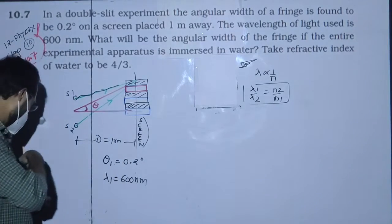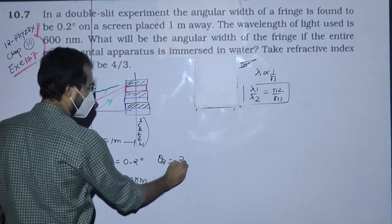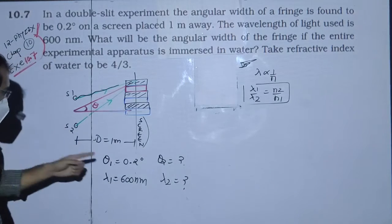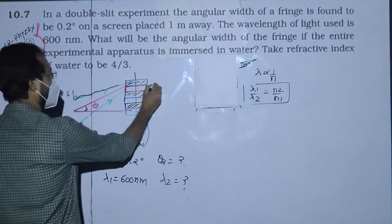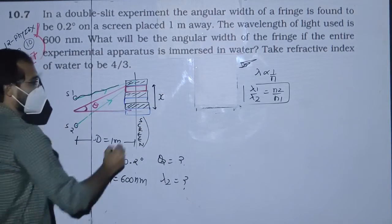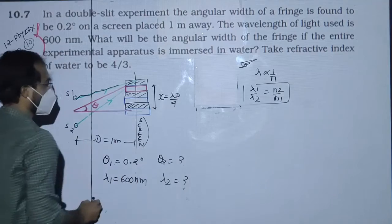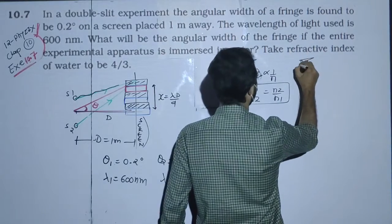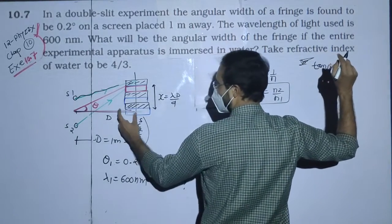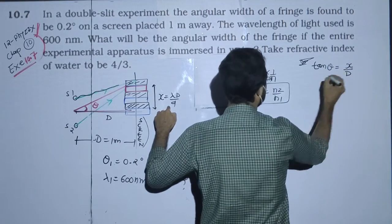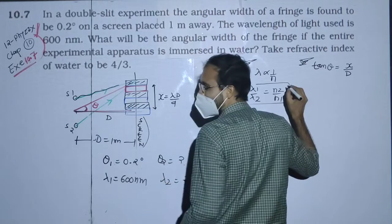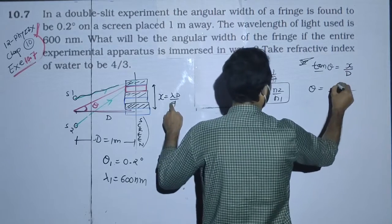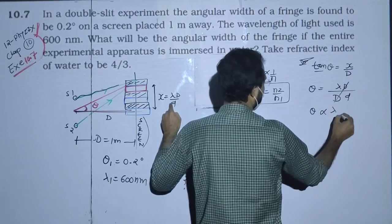We will call the new angular width theta 2. The new wavelength is not directly known but we have the equations. The key equation is for angular width theta: fringe width x equals lambda times D divided by d, and from tan(theta) equals opposite upon adjacent, tan(theta) equals x/D, so theta is directly proportional to lambda.